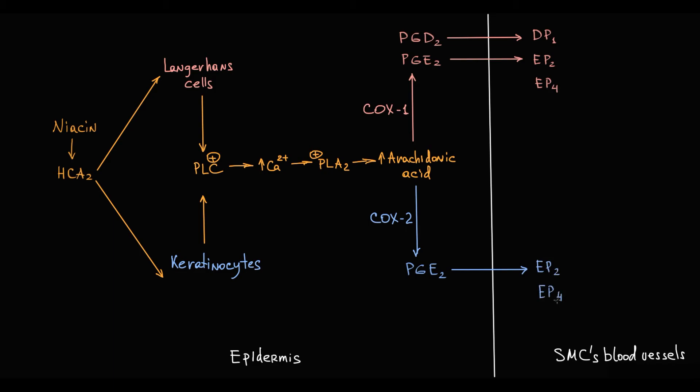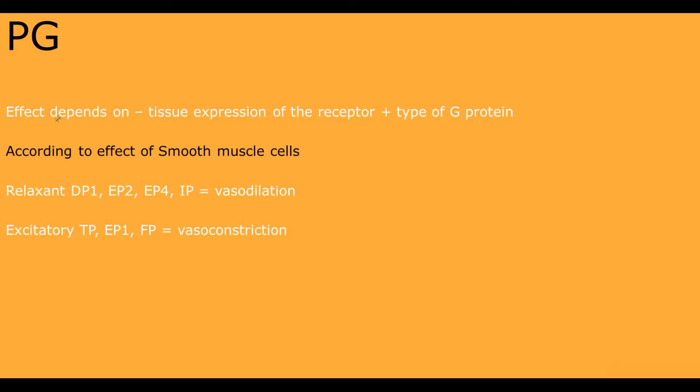From biochemistry, we know that the effects of prostaglandins depend on tissue expression of the receptor and on type of G protein to which this receptor is coupled. Generally, all prostaglandin receptors are divided into two major groups according to their effects on smooth muscle cells: relaxant and excitatory.